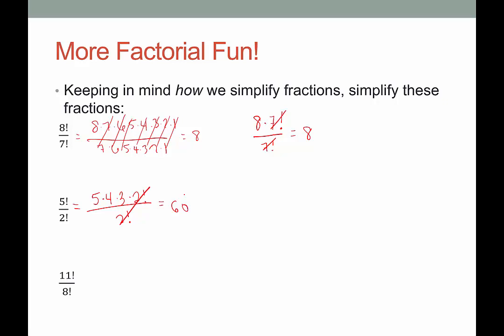One more: 11 factorial over 8 factorial. I'm going to start by expanding 11 factorial. That would be 11 times 10 times 9, and then I get to 8 — I'm going to stop and just leave it as 8 factorial because that's what I see as a factor of the denominator. Cross those out and what I have left is 11 times 10 times 9, which would be 990.